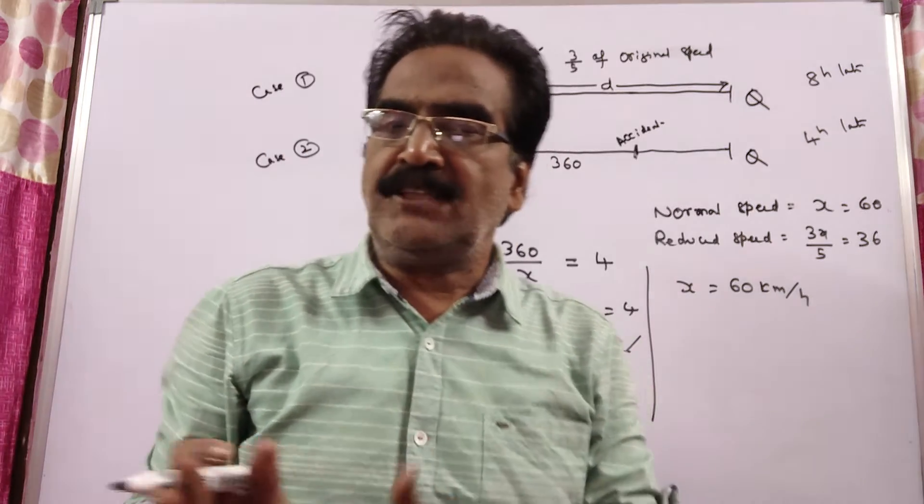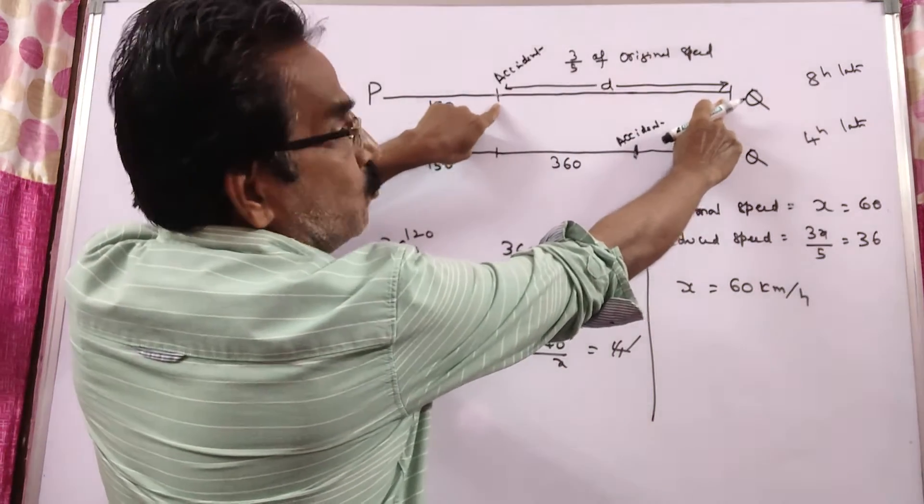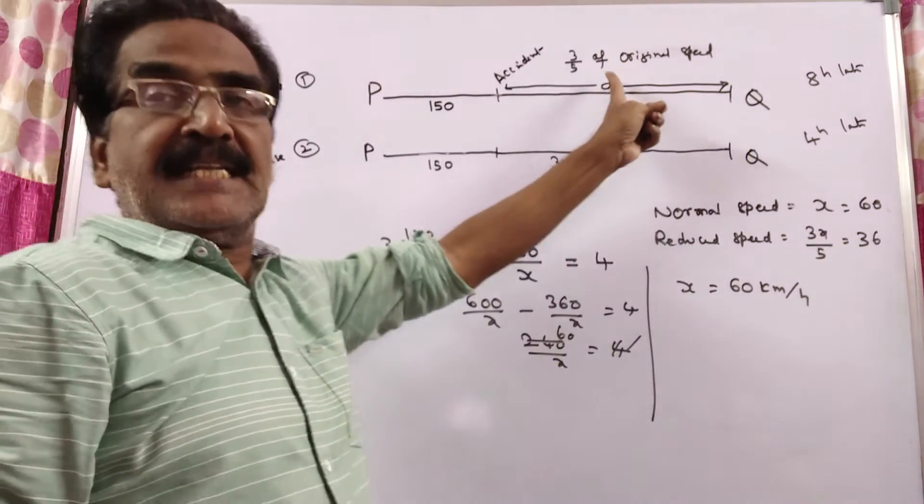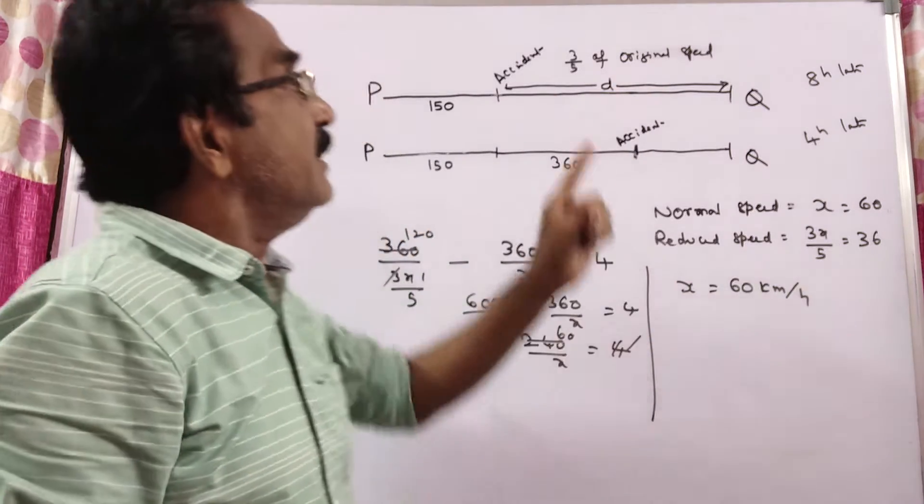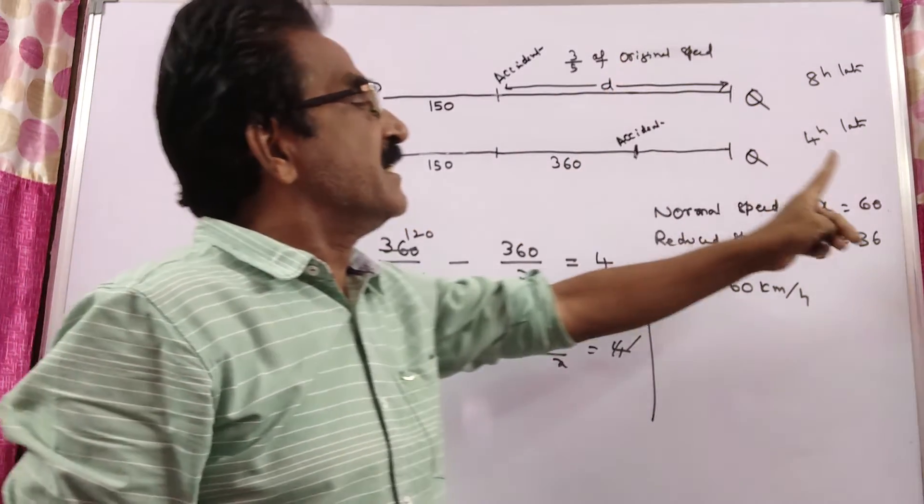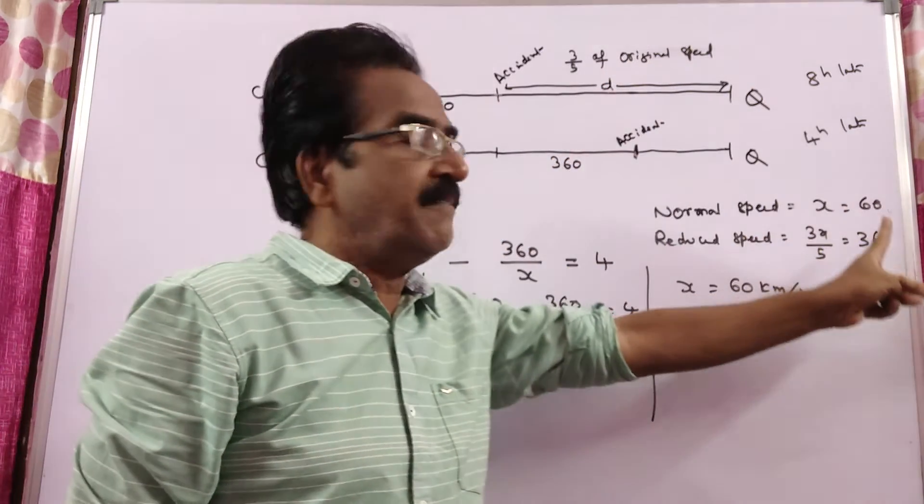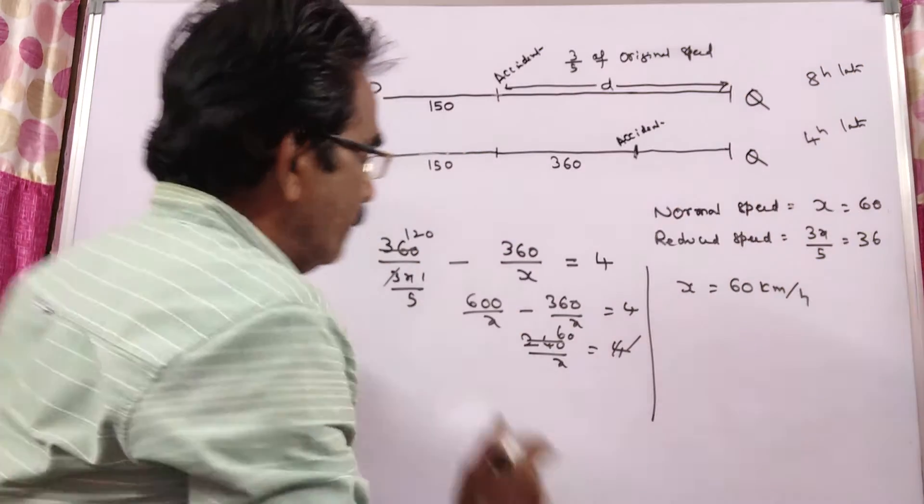Friends, now let us try to find the distance. See, friends, say the distance between these two points is D. Friends, D kilometers, difference between D kilometers with normal speed and D kilometers with reduced speed is equal to 8 hours.